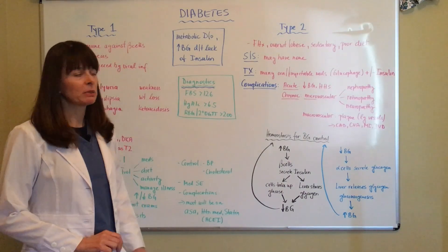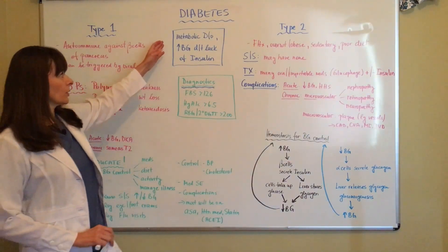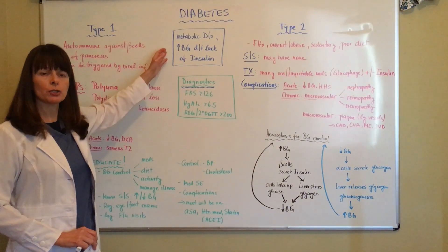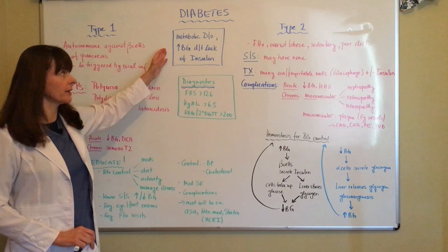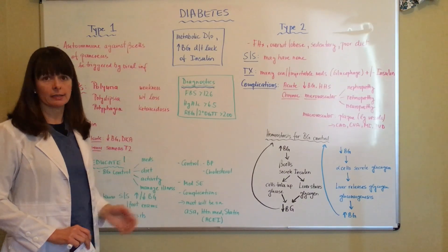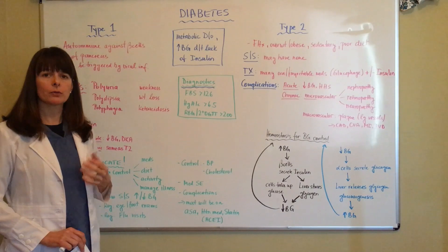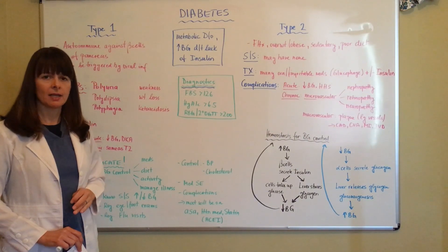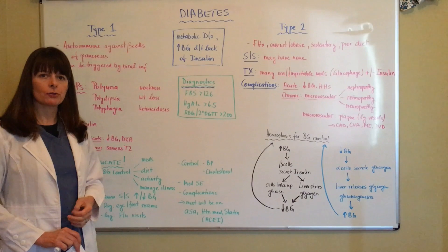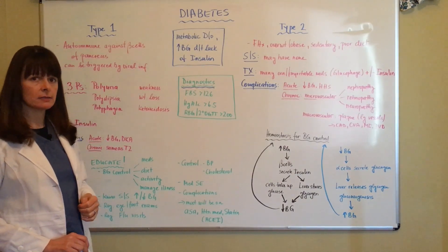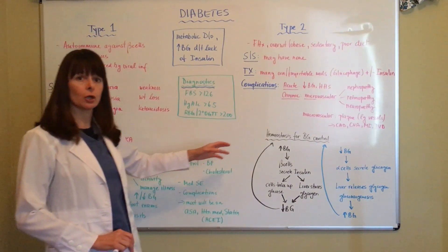In general, diabetes is a metabolic disorder that causes blood sugar levels in the body to rise because of lack of insulin. We have to distinguish between type 1 and type 2 diabetes, but in order to do that, let's first review the homeostasis of normal blood sugar control.